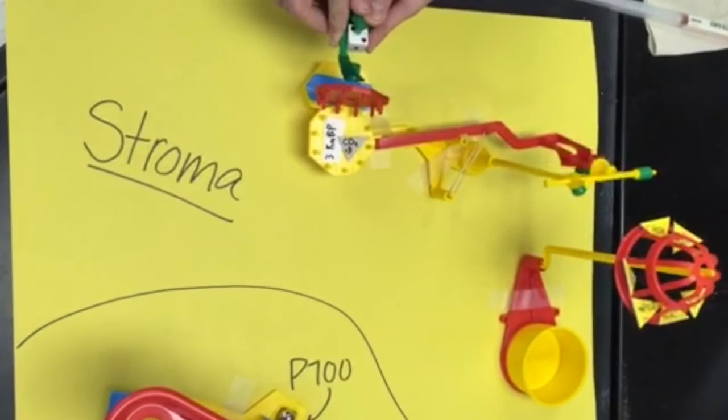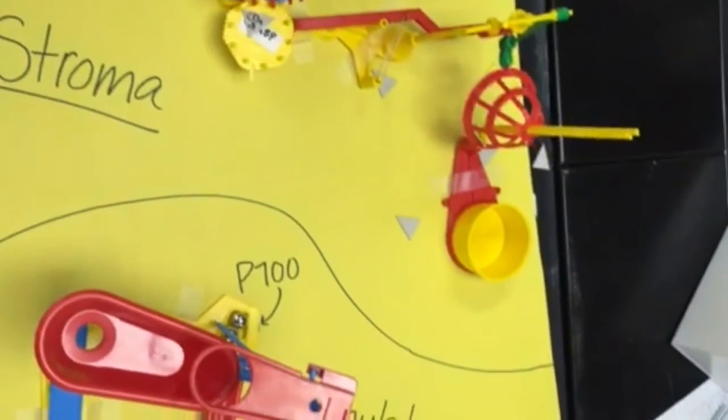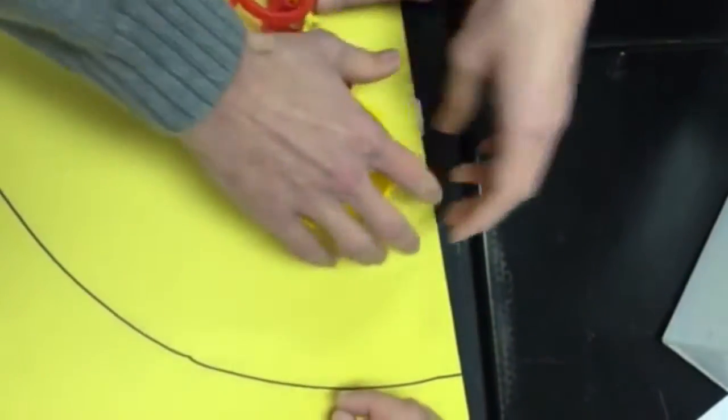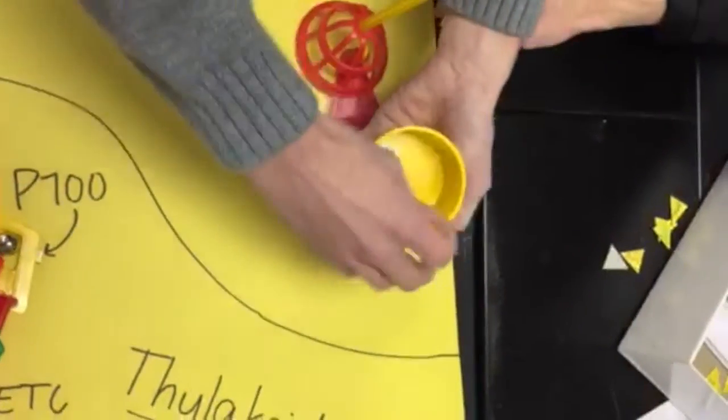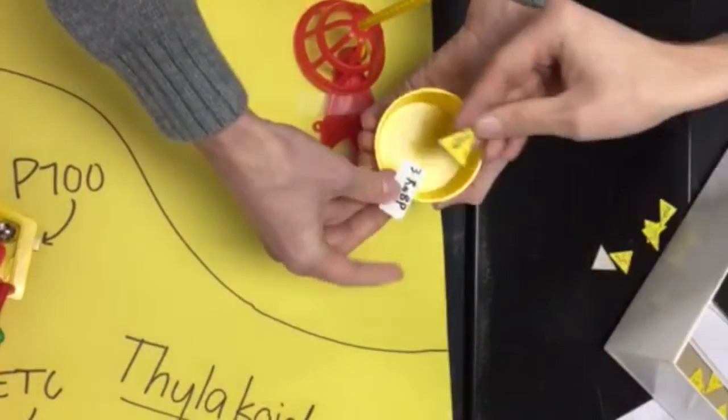In this cycle, three CO2 atoms are fixed onto RuBP, which is transformed into six PGA molecules, five of which are used to regenerate RuBP, and the last leaves the cycle.